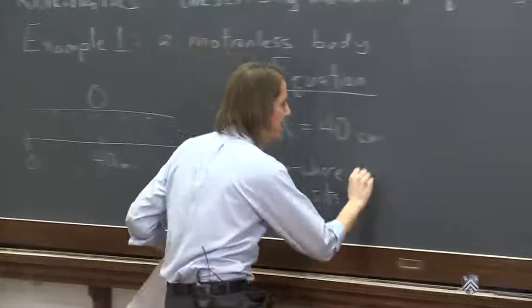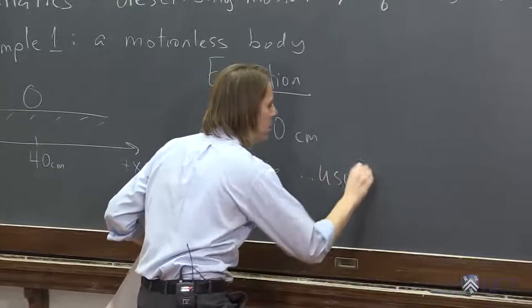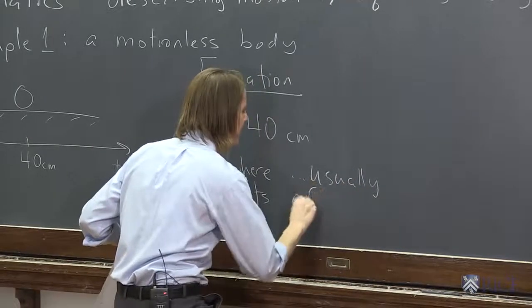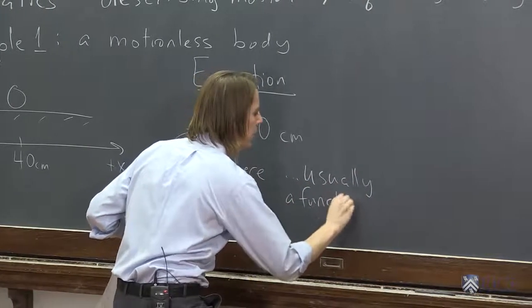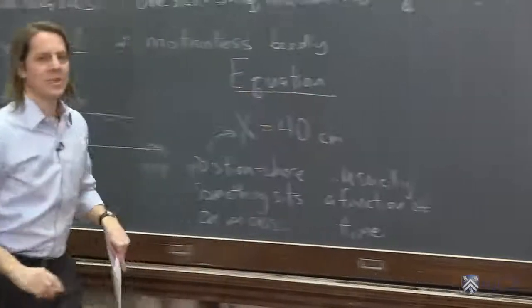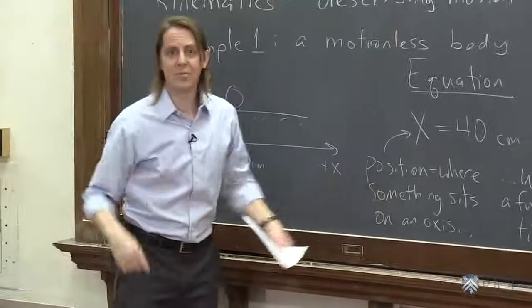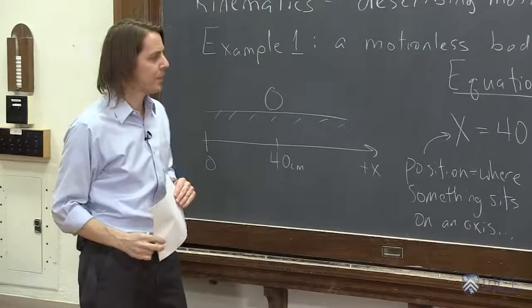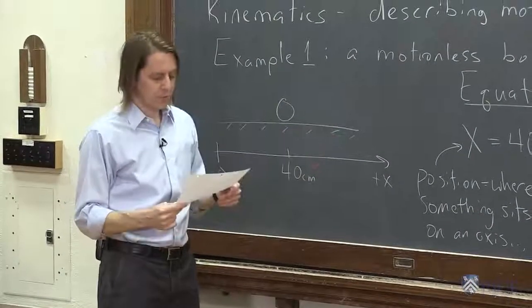It's usually a function of time in kinematics. But in this case, it's a constant because HAL isn't moving. He's just sitting there. So that's the equation, x equals 40 centimeters.